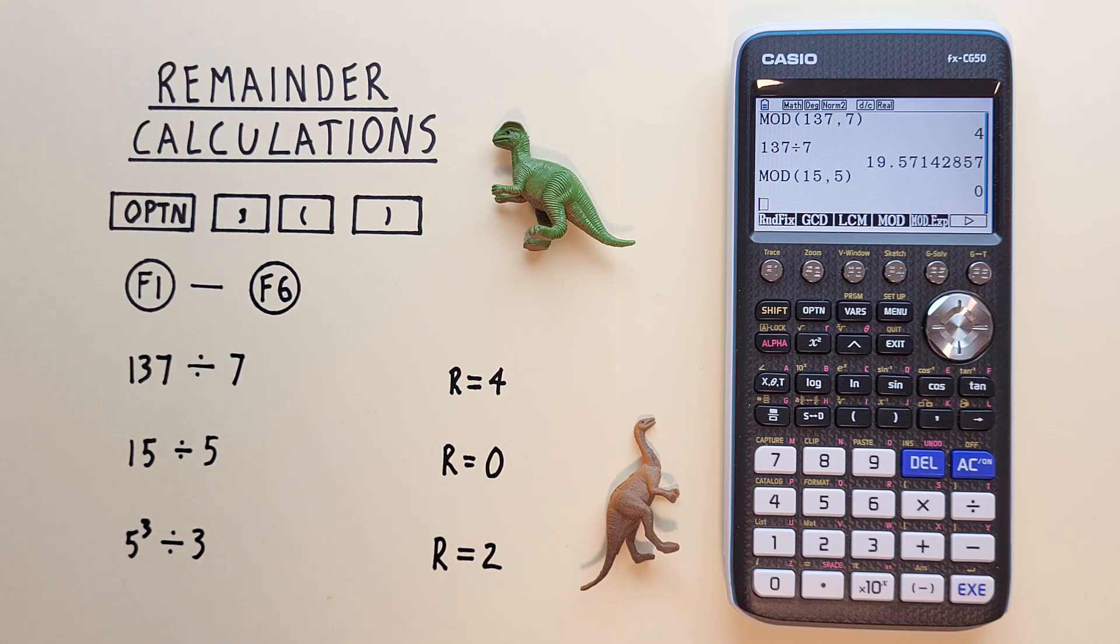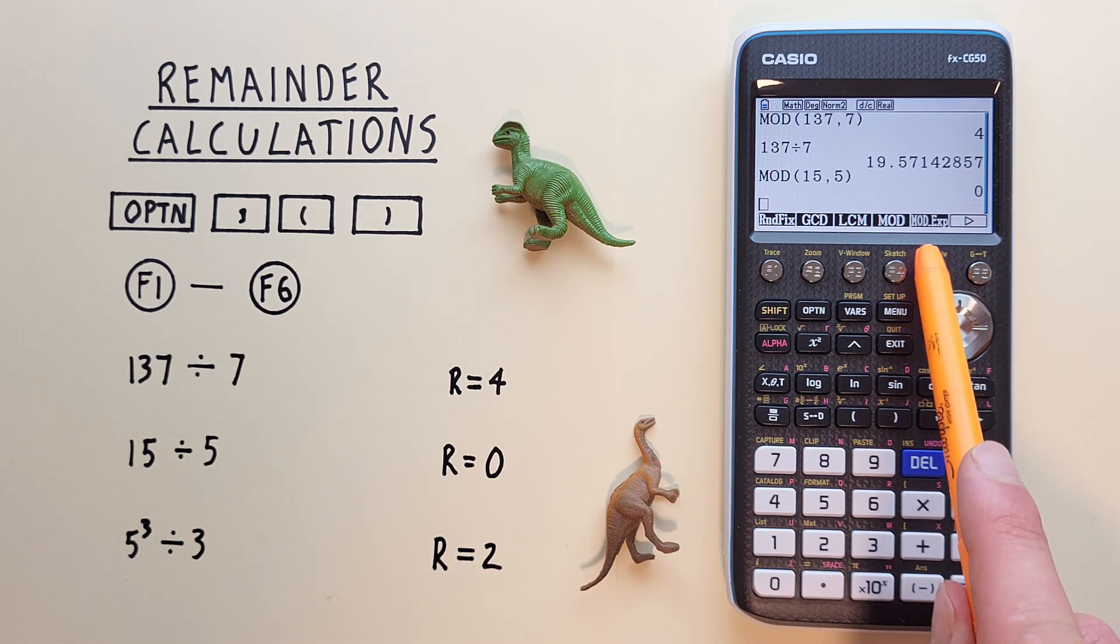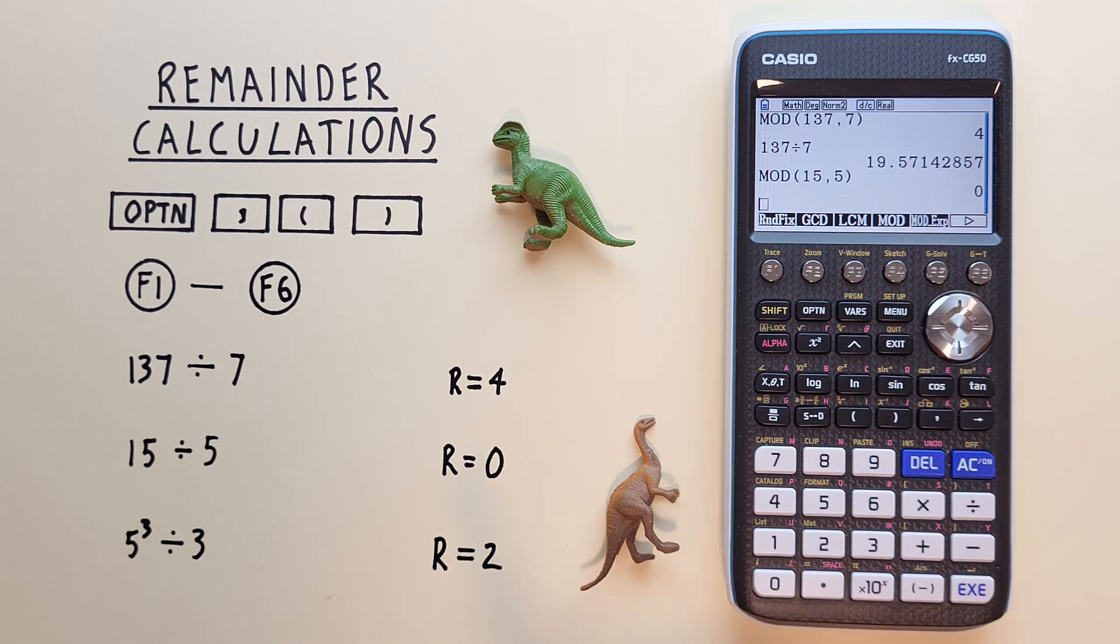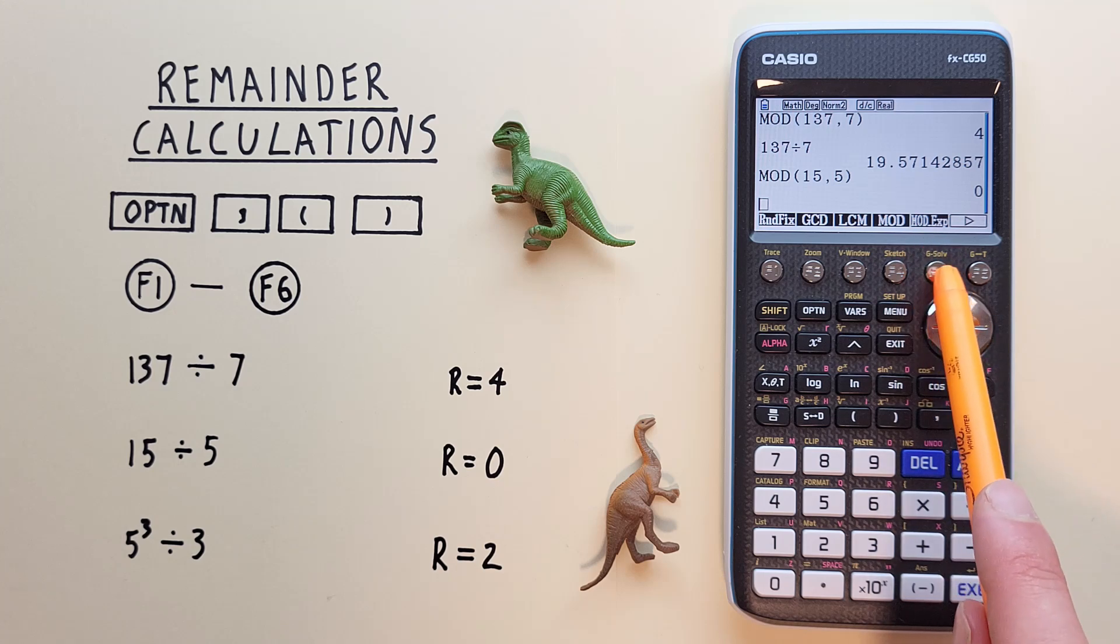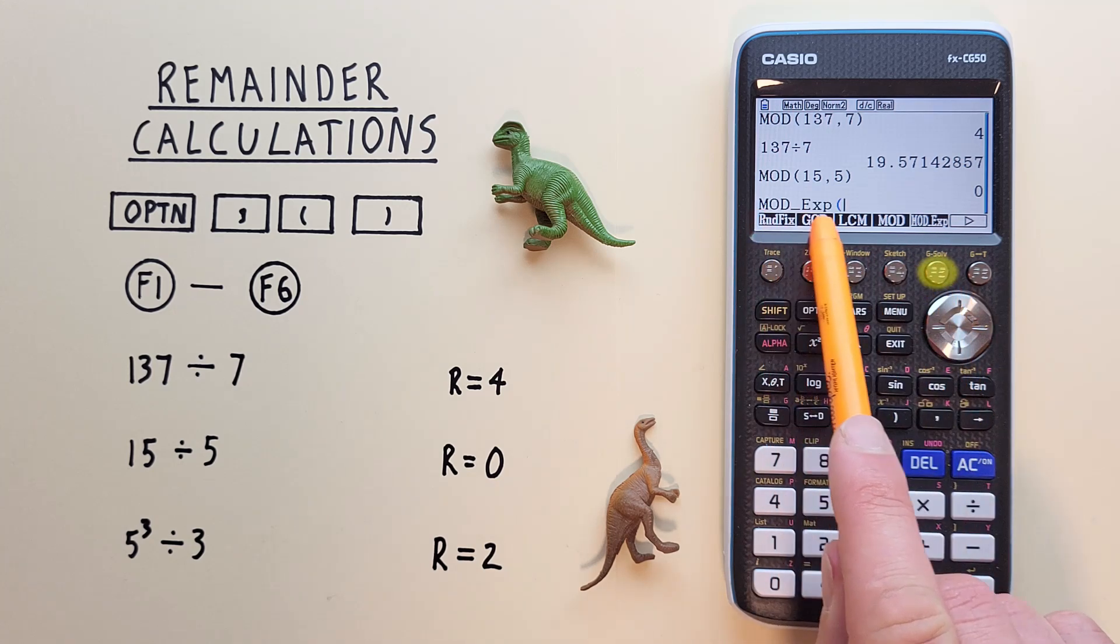We can also find the remainder or modulus of exponential functions, like for example, 5 to the power of 3. To do that, we use the F5 function here, mod EXP. So if we want to find the remainder of 5 to the power of 3 divided by 3, we hit mod EXP F5 so that we see that on our screen.